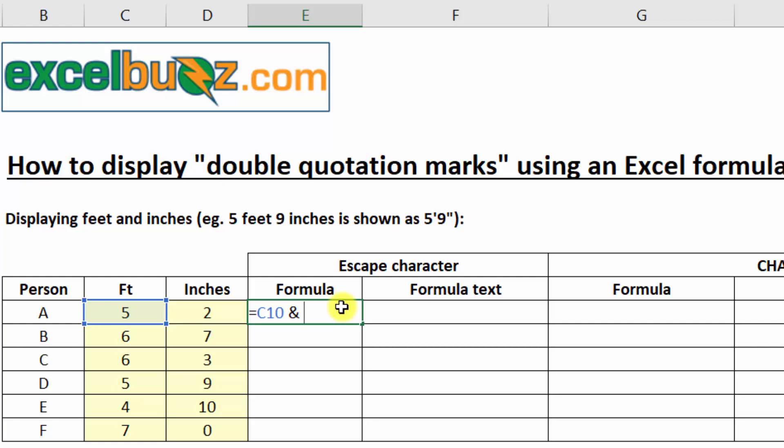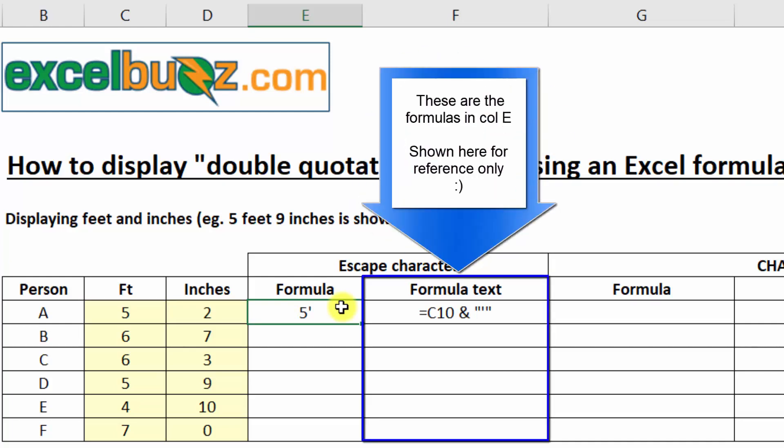So to tell Excel we have a string of text, we type a double quotation mark, and then our apostrophe. And then we finish the string of text by typing another double quotation mark. Enter. So we can see we have five feet.